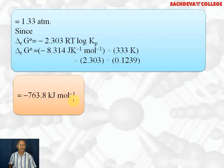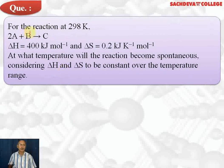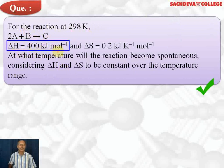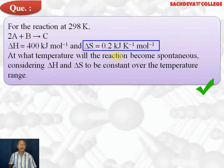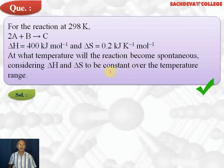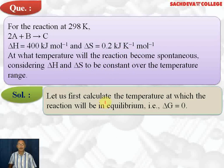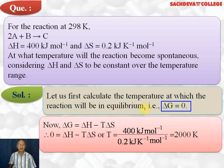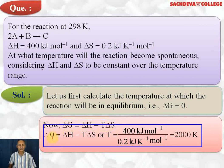Next question: for the reaction at 298 K — 2A + B → C — delta H = 400 kilojoules per mole and delta S = 0.2 kilojoules per kelvin per mole. At what temperature will the reaction become spontaneous, considering delta H and delta S to be constant? First, we calculate the temperature at which the reaction is in equilibrium, where delta G = 0. Using the Gibbs-Helmholtz equation: delta G = delta H − T·delta S.